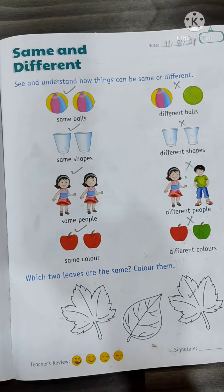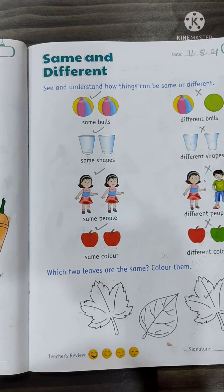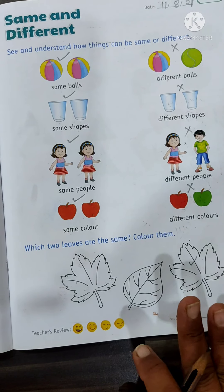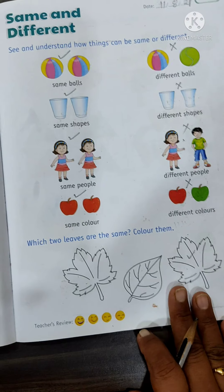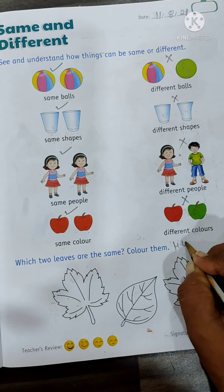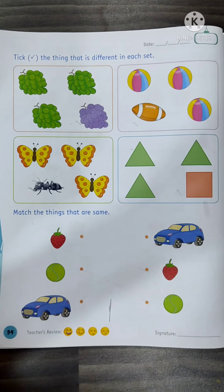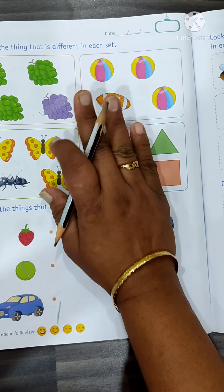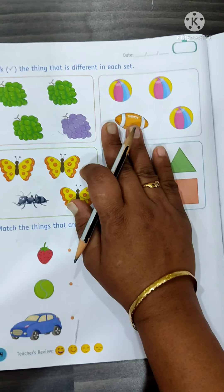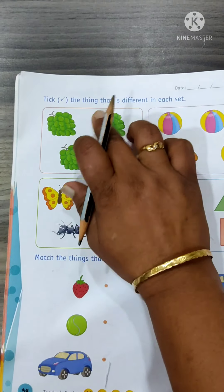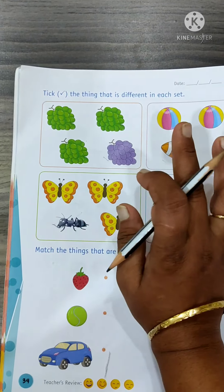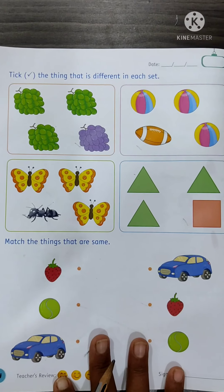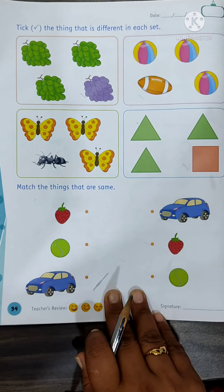Now in the next exercise: which two leaves are the same? Color them. Kids, this is homework for you — color the same leaves and send the picture to me. Now turn to page number 34. We have already learned same and different on page 33. You have to tick on the different item in each set. The next exercise is to match the same things. Page number 34 is homework — solve it and send the picture to me.